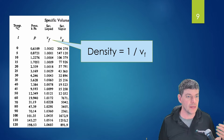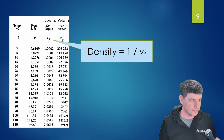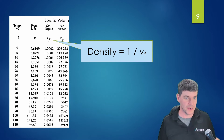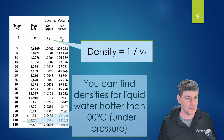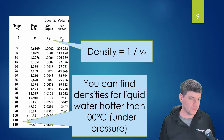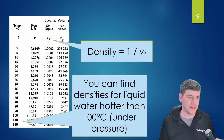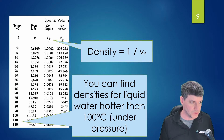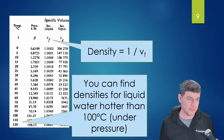One other thing to note on this table: if we pressurize water, we can raise the boiling point above 100 degrees, so it's possible to have liquid water hotter than 100°C. This table gives us the ability to calculate densities for water hotter than 100 degrees, which is helpful for pressurized water systems where the water temperature could exceed 100°C.